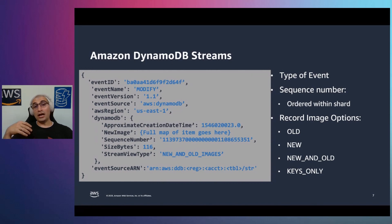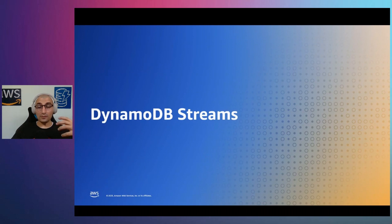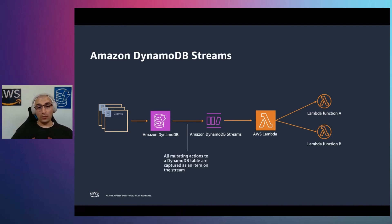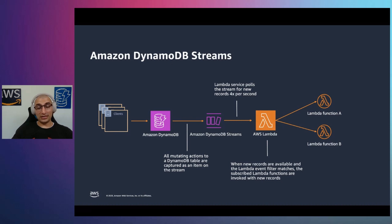There are four different stream view type options: you can have the new image, the old image, both the new and old images, or only the keys that have been modified. There are two main options to work with DynamoDB Streams. The first is the DynamoDB Streams solution, where all the mutations from your application are sent to DynamoDB Streams and then, assuming you consume those streams with AWS Lambda, Lambda will poll those records four times per second. If the records match the event filtering condition configured in Lambda, the Lambda function will be executed. You can have up to two Lambda functions subscribed to the same stream.